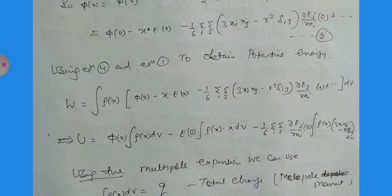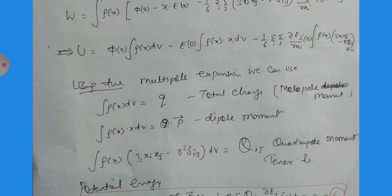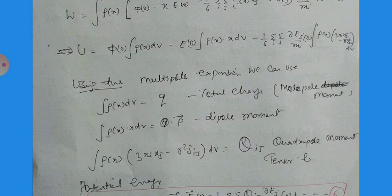Using this potential in equation W = ∫ρ(x)φ(x)dv, we can write U = ∫ρ(x)[φ₀ - x·E₀ - (1/6)Σᵢ Σⱼ (3xᵢxⱼ - r²δᵢⱼ)(∂Eⱼ/∂xᵢ)|₀] dv. This expands to: U = φ₀∫ρ(x)dv - E₀·∫ρ(x)x dv - (1/6)Σᵢ Σⱼ (∂Eⱼ/∂xᵢ)|₀ ∫ρ(x)(3xᵢxⱼ - r²δᵢⱼ)dv.